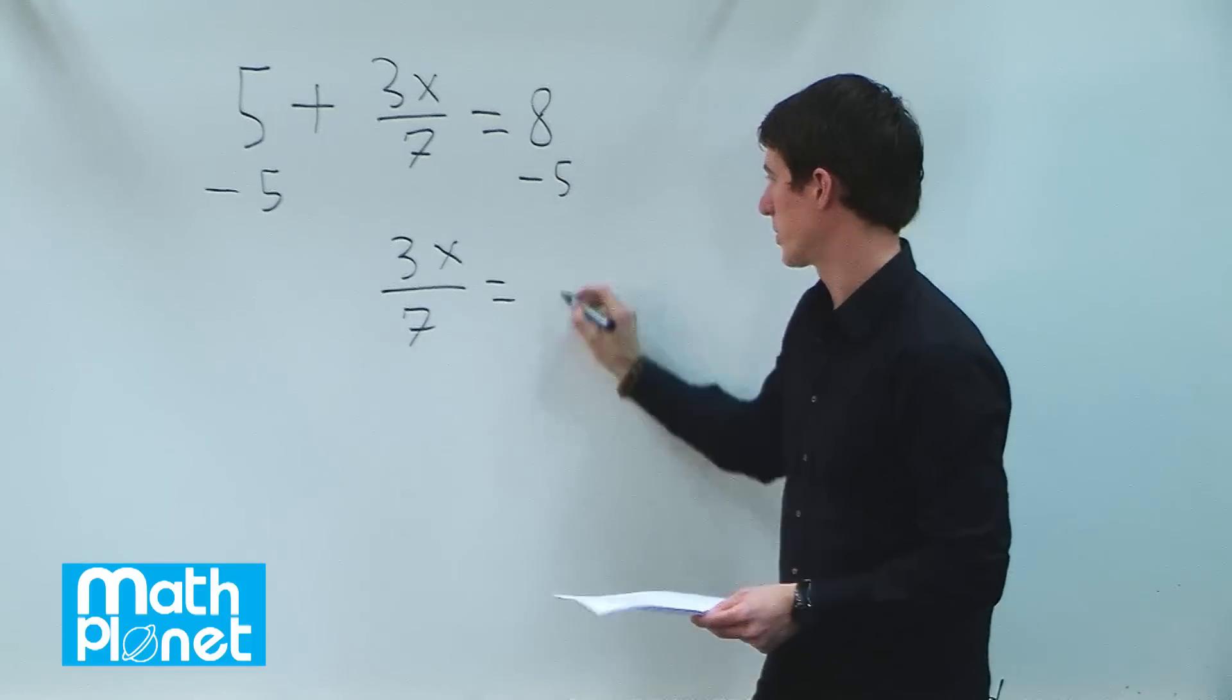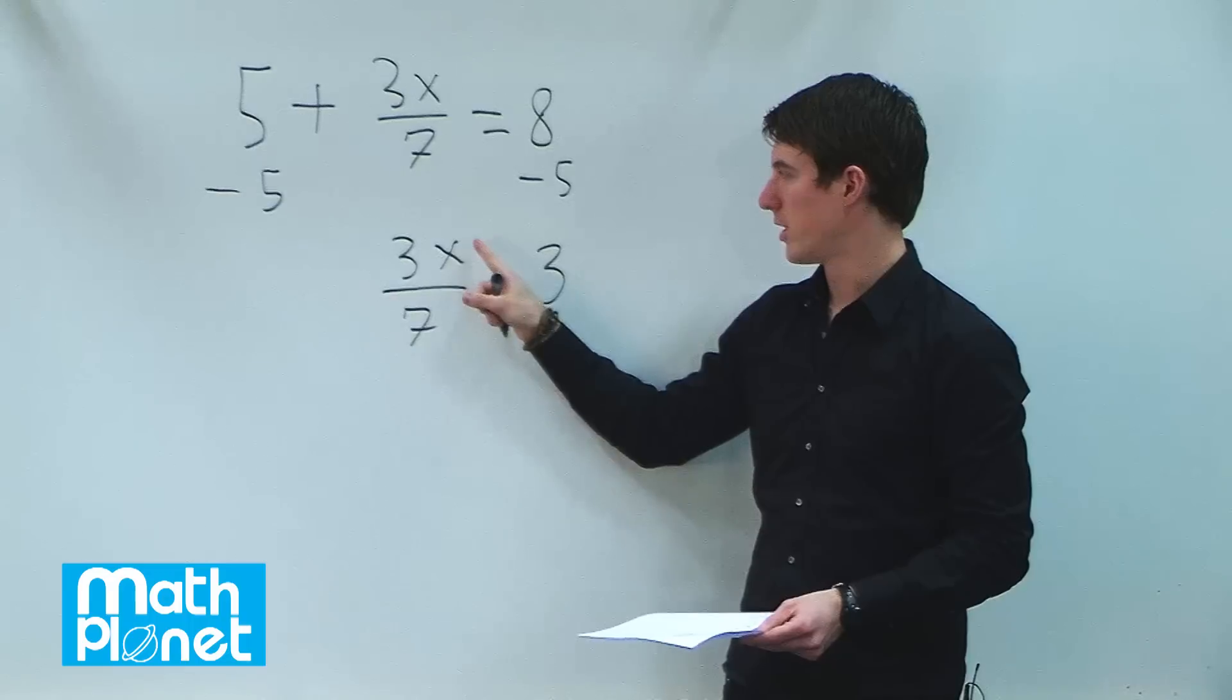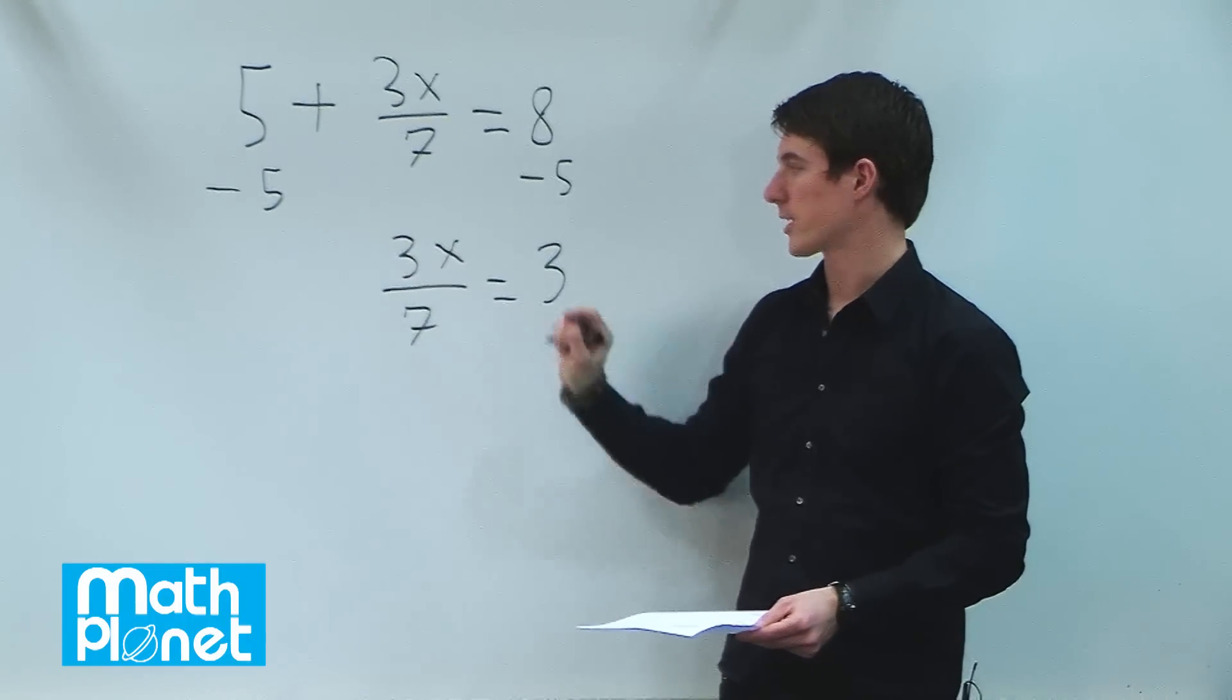Equals 8 minus 5, which is 3. Now we have one more step. We need to get the x by itself, so we have to do an inverse operation of the number in front of the x.